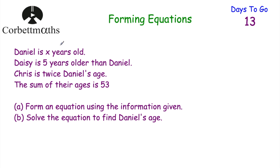Here's our first question. Daniel is X years old. Daisy is five years older than Daniel. Chris is twice Daniel's age. The sum of their ages is 53. Part A says form an equation, and part B says solve the equation and find Daniel's age. Press pause now and try this question.